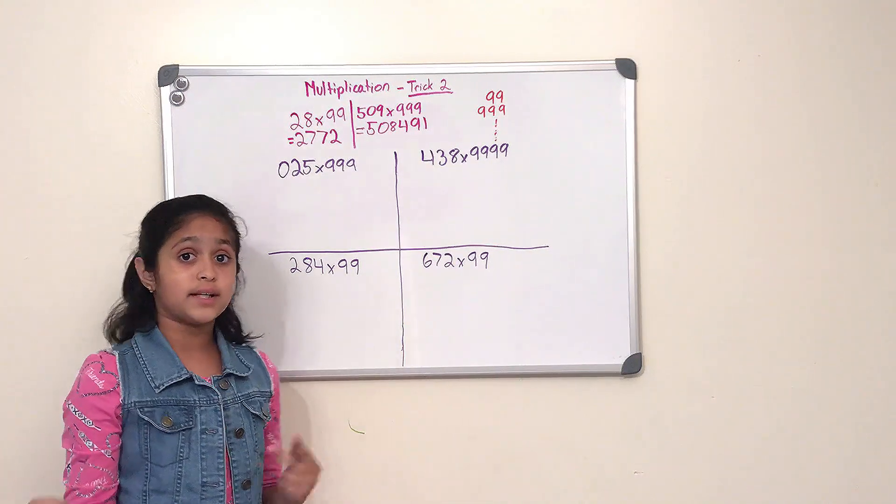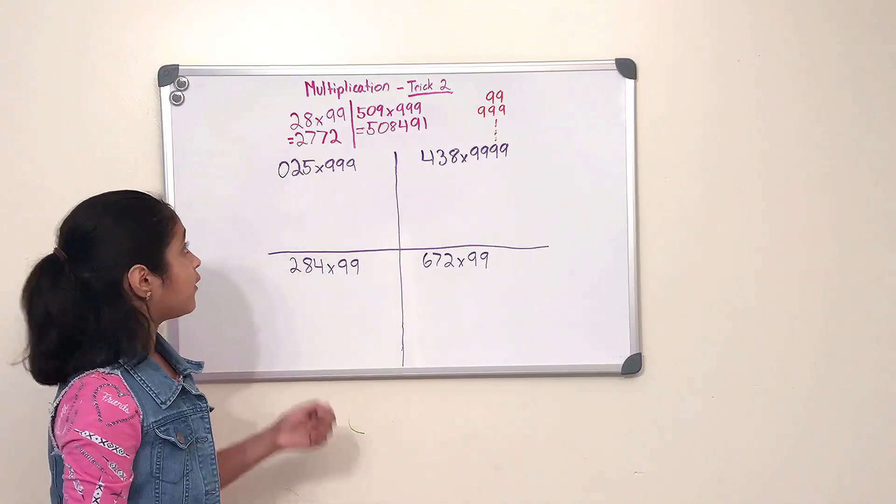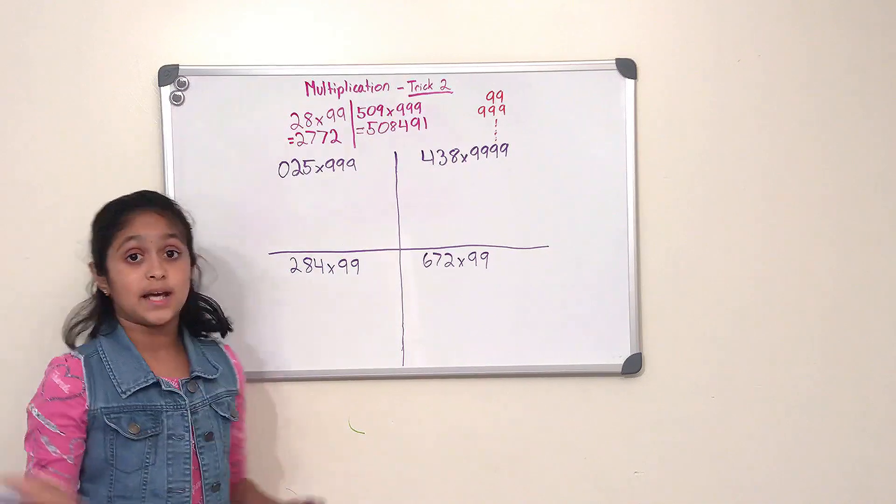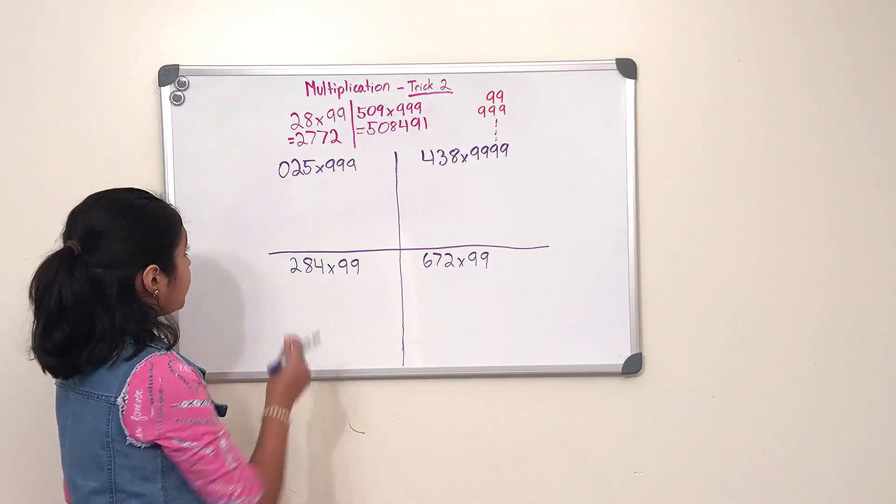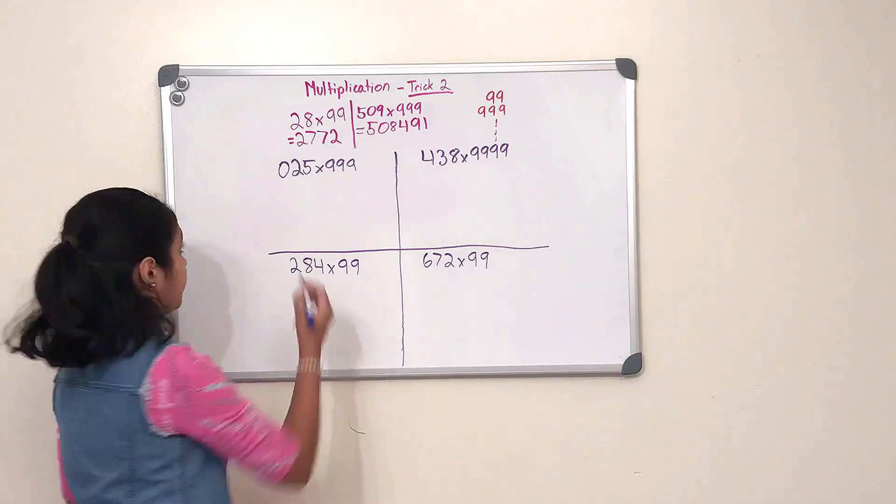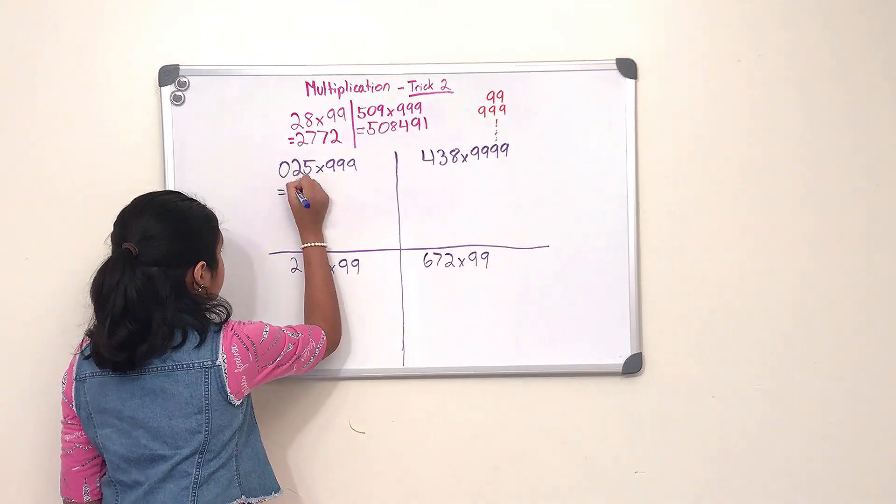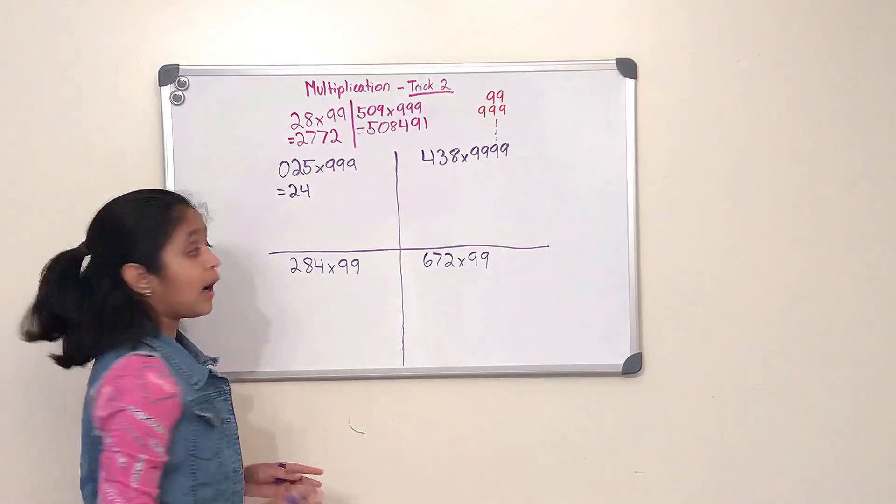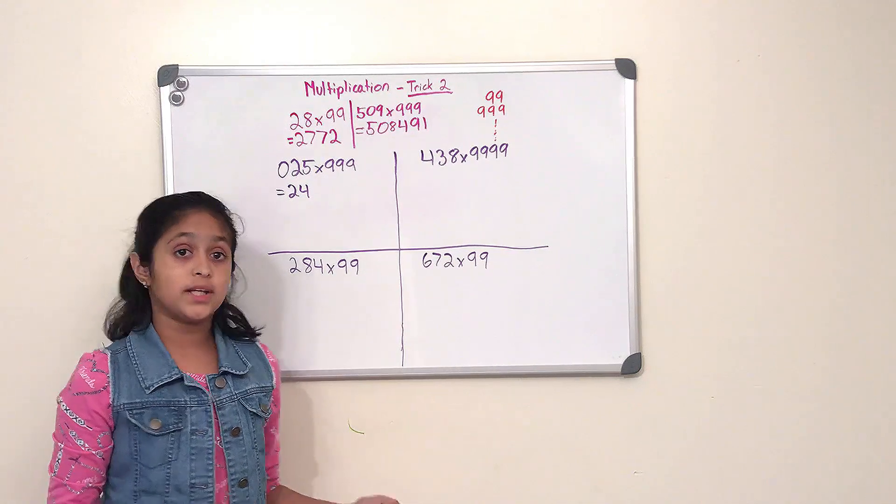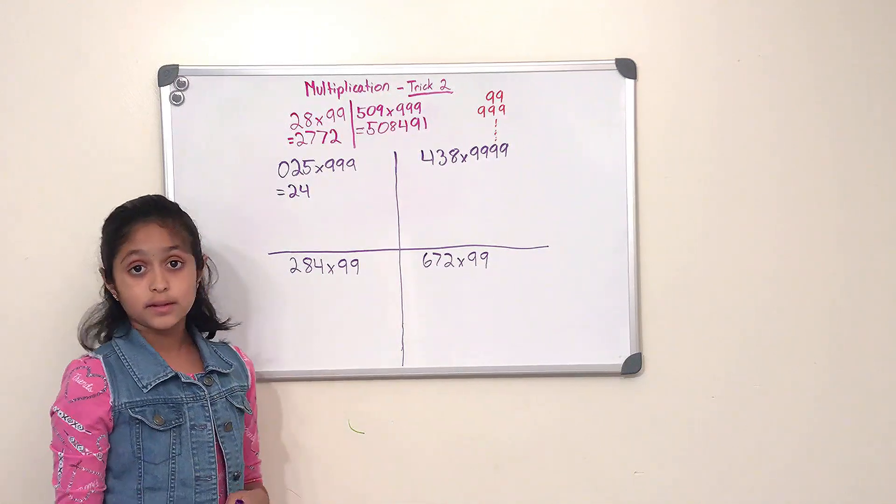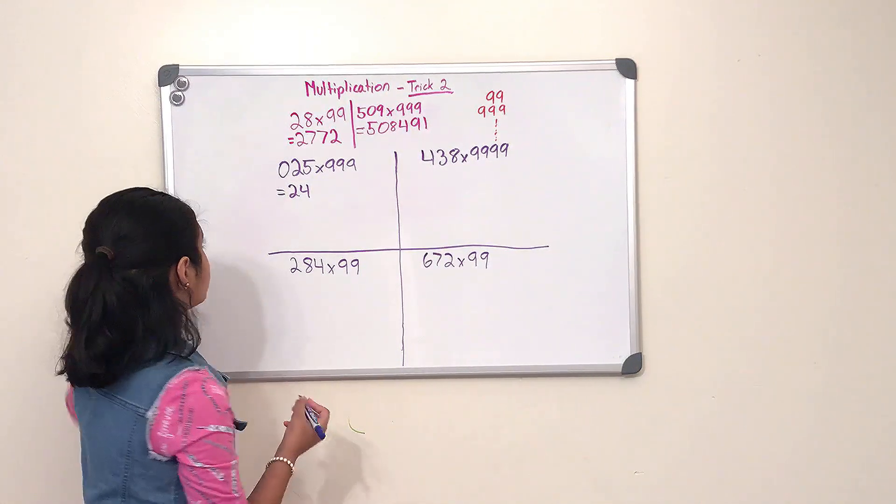So now step two is pretty simple, all we have to do is do the same steps as trick number one. So that would be to subtract 25 minus one, and that would be 24. And then now we have to apply the rule, which is subtracting all from nine and the last from ten.